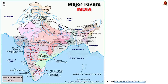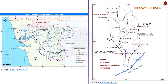Next is Mahanadi; the states in dispute are Chhattisgarh and Odisha. For Narmada, the states in dispute are Madhya Pradesh, Gujarat, Maharashtra and Rajasthan. Then rivers Ravi and Beas: the states in dispute are Punjab, Haryana and Rajasthan. For river Mahadai, the states in dispute are Goa, Maharashtra and Karnataka.